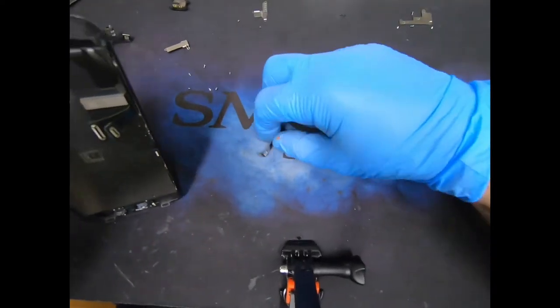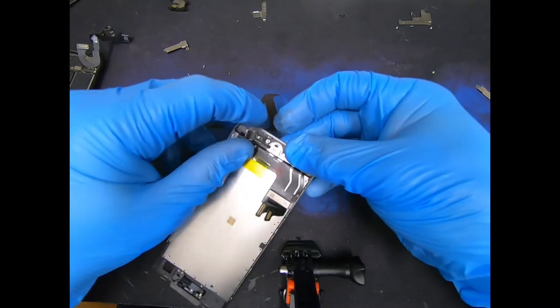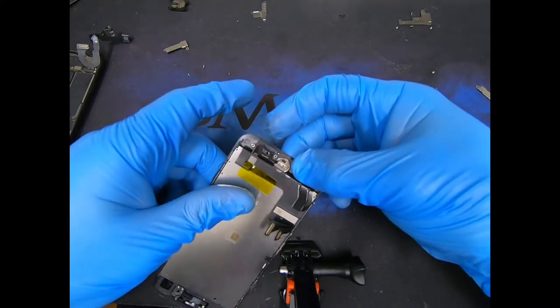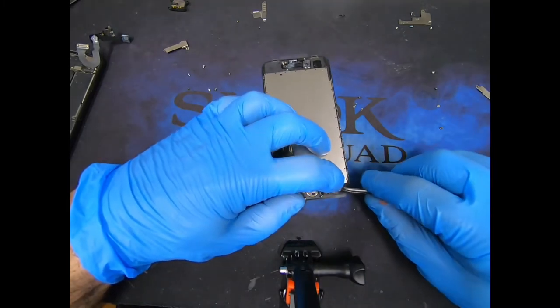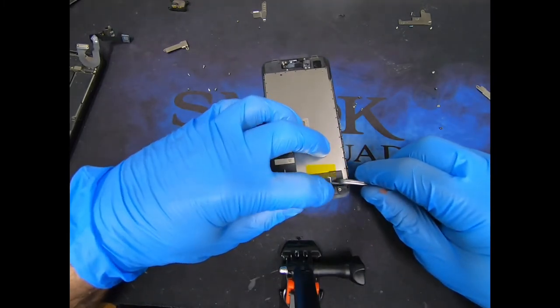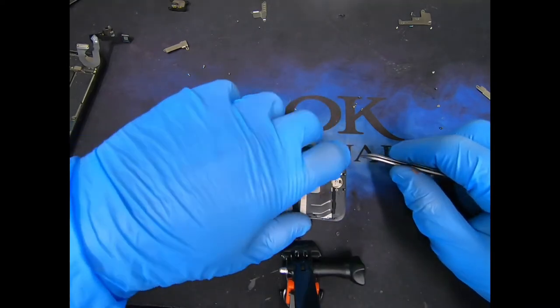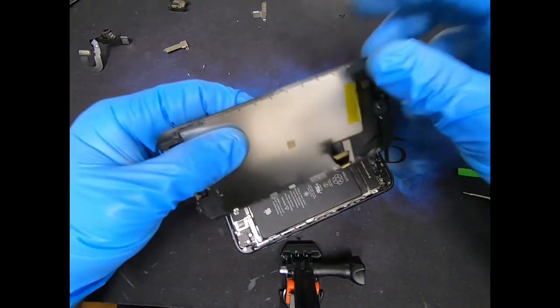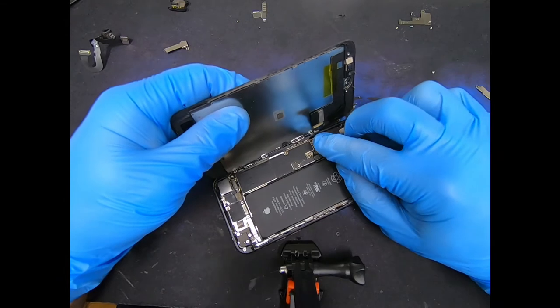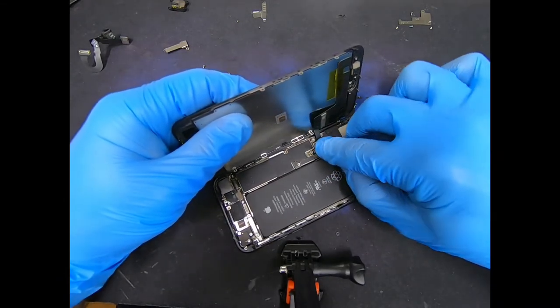Now we're going to grab our new screen. Install the home button. Now this is a refurbished screen, which means it's an original Apple LCD glass that was refurbished. We get these from ijems.com. That's i-j-e-m-s dot com. He offers a lifetime warranty on them.